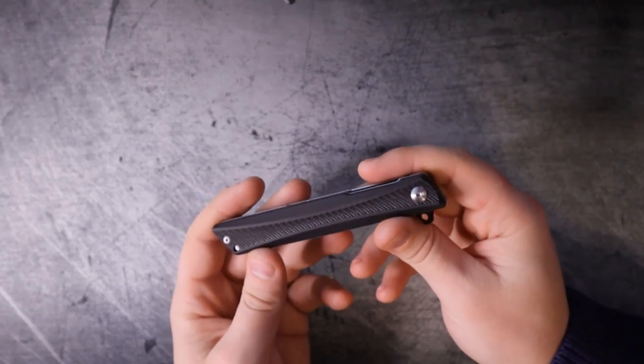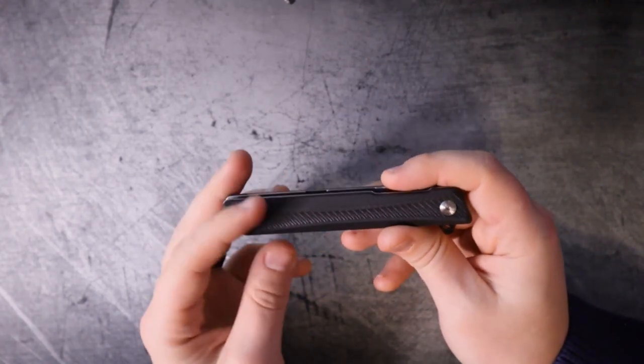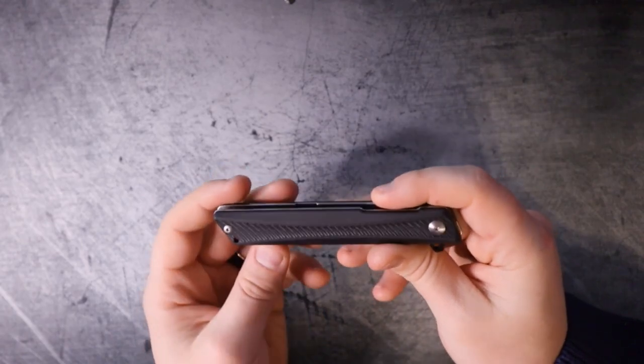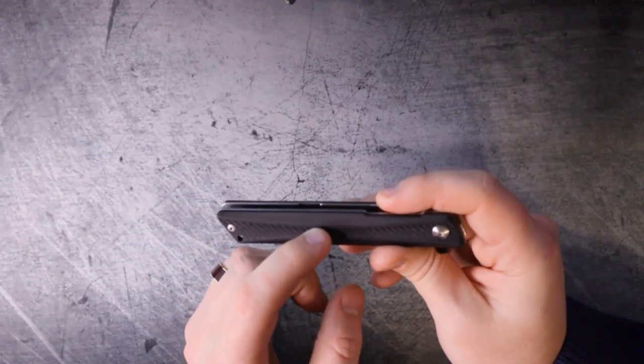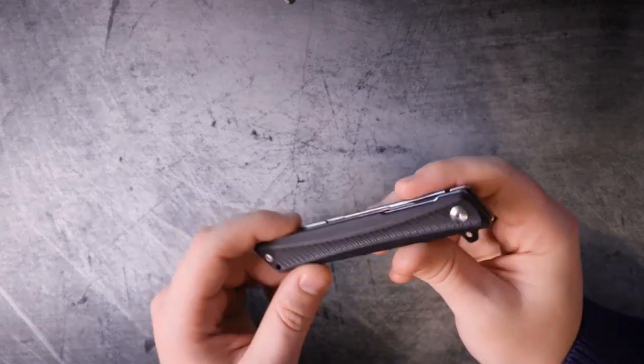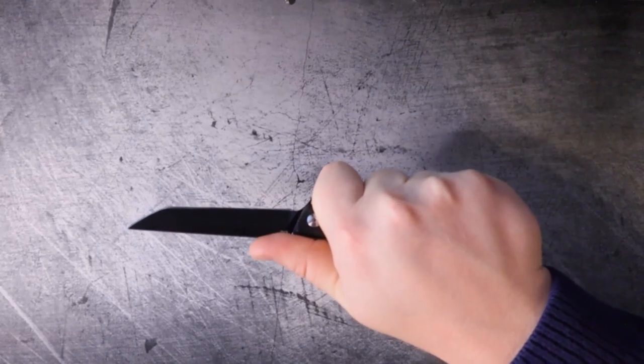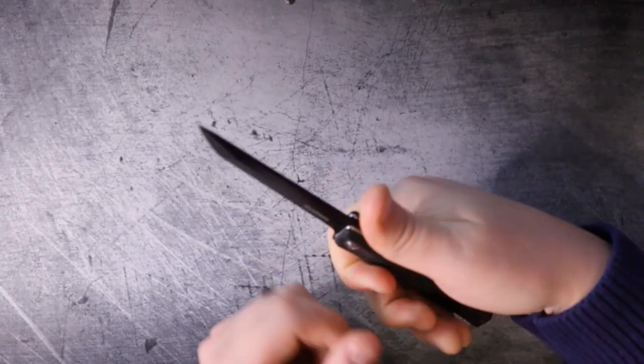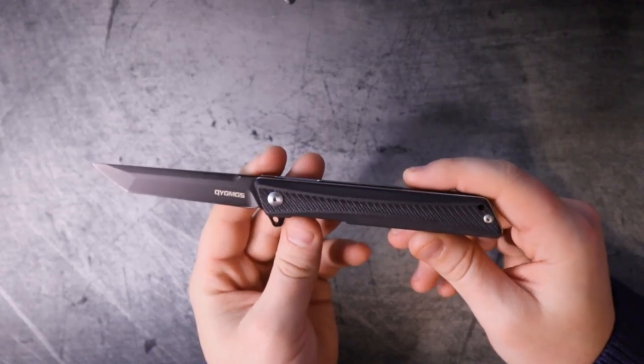I also really like the fact that these G10 handle scales have texturing and depth and it's not just one type of texturing. It goes from these broad striations to finer ones so that where the meat of your hand connects to the handle scales, you get a really good grip. There's not a whole lot that I can complain about at the $42 price point.